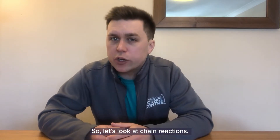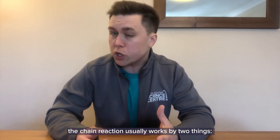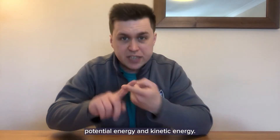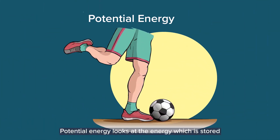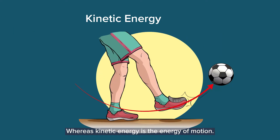So let's look at chain reactions. In the case of a Rube Goldberg machine, the chain reaction usually works by two things: potential energy and kinetic energy. Potential energy looks at the energy which is stored because of its position or state, whereas kinetic energy is the energy of motion.